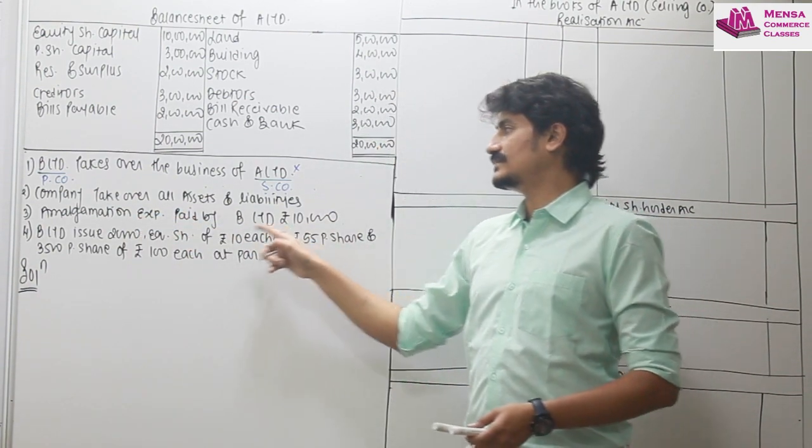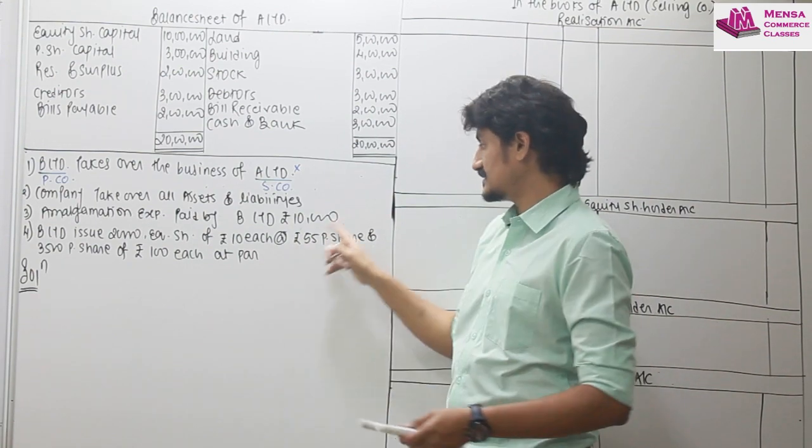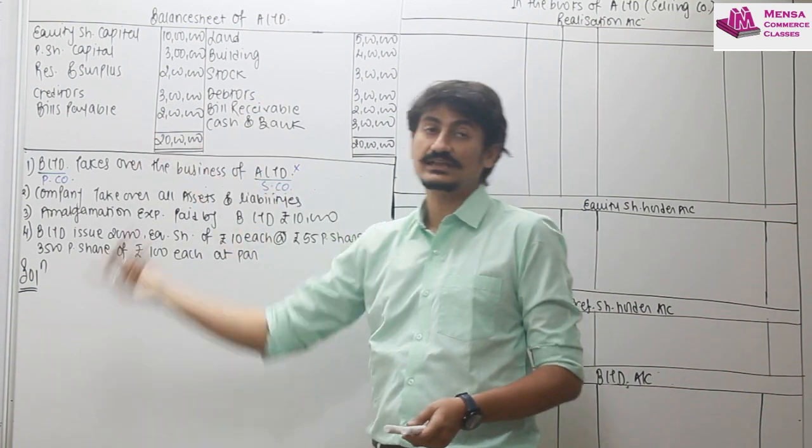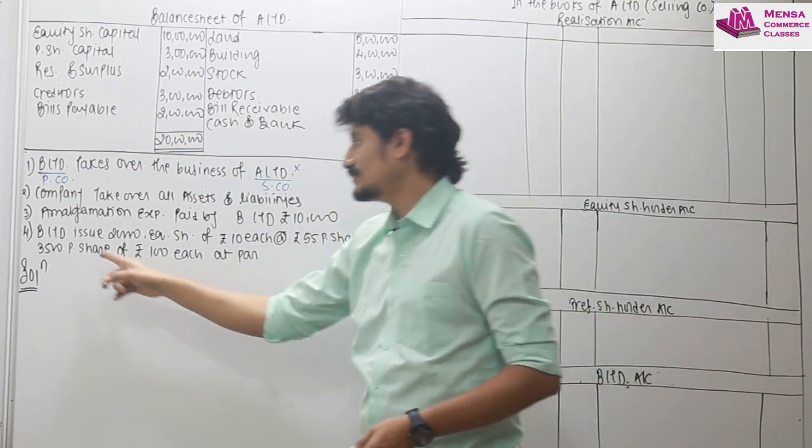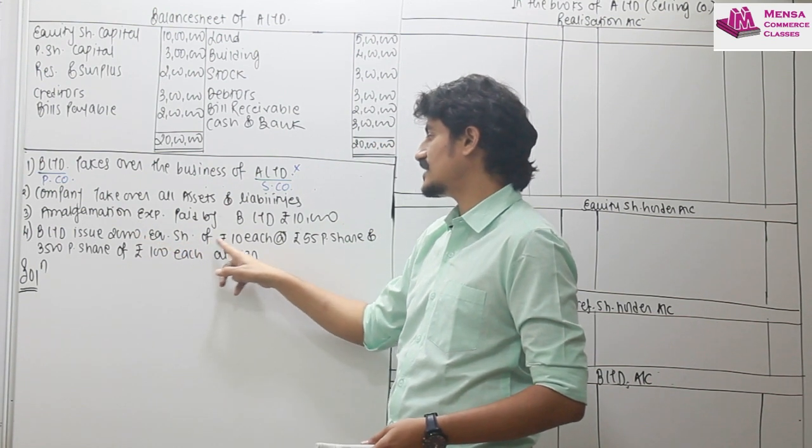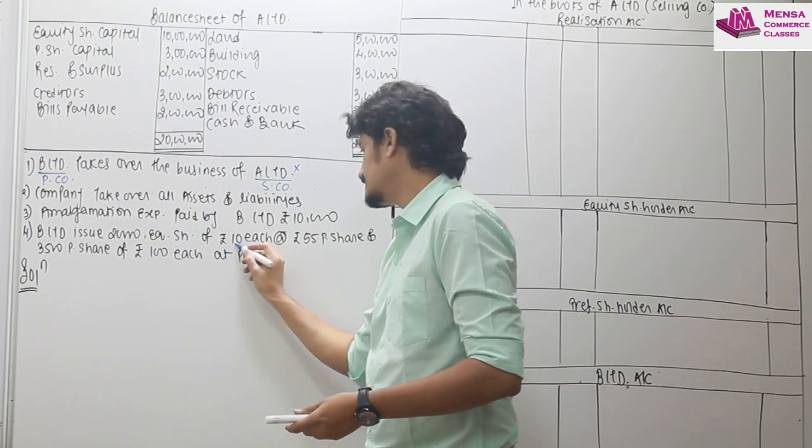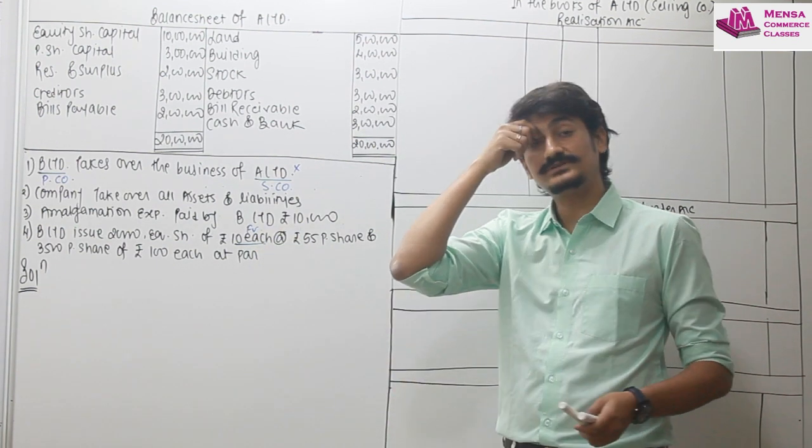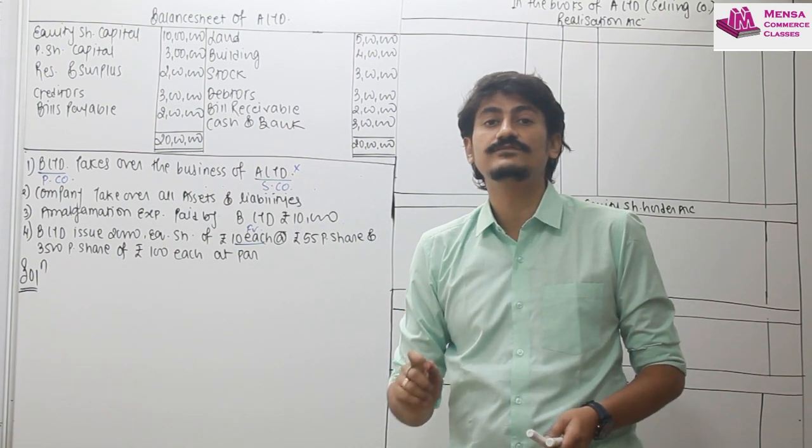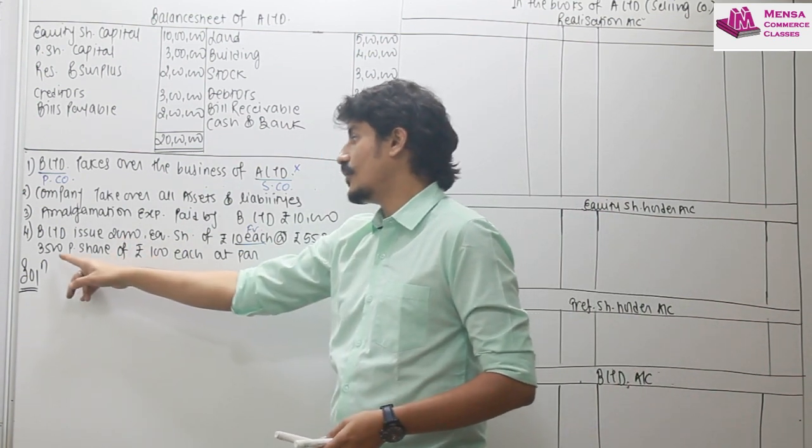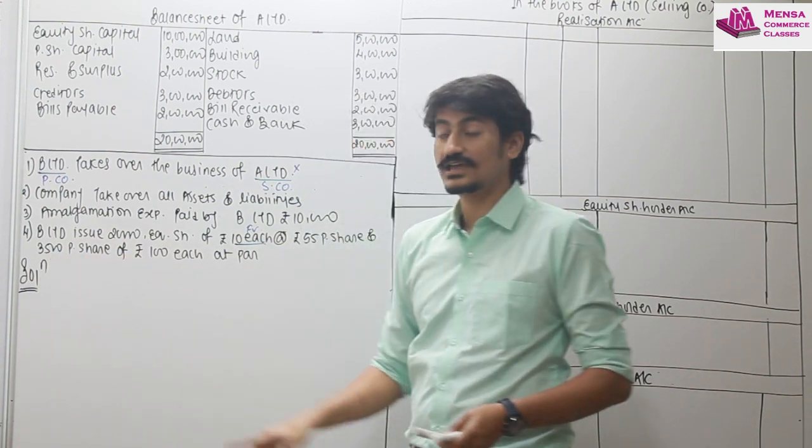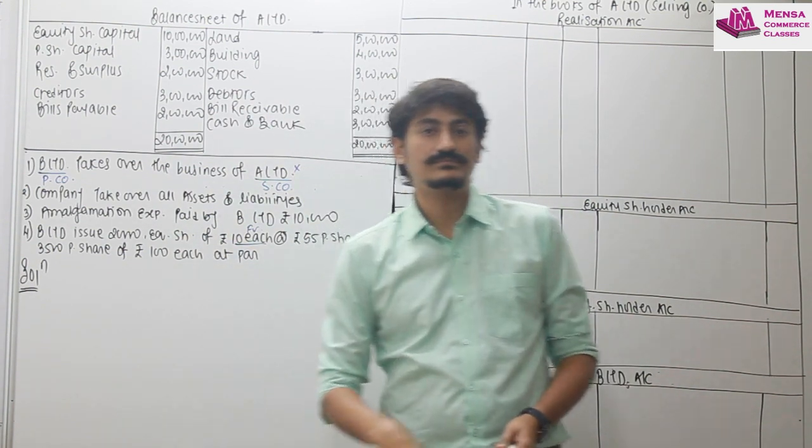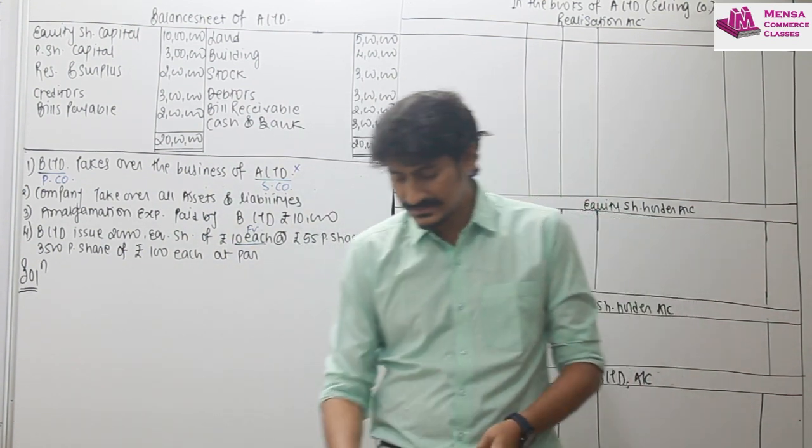Now, amalgamation expenses paid by B limited, what is the purchasing company, is 10,000. And if you are talking about assets and liabilities are taken over by the company, what is the payment? So B limited issued 20,000 equity shares of 10 rupees each. It means the face value is 10 rupees, but at 55 per share. So one share value is 55 rupees. How much? 20,000. And 3,500 preference shares of rupees 100 each at par. So this question is set. Now, how do we solve it?